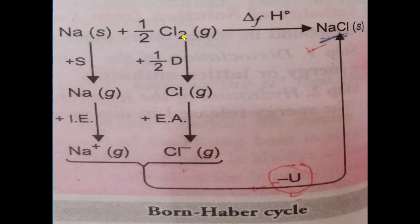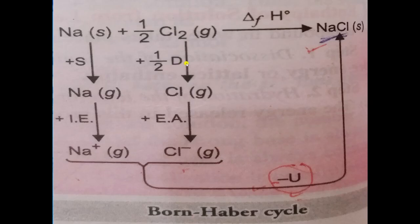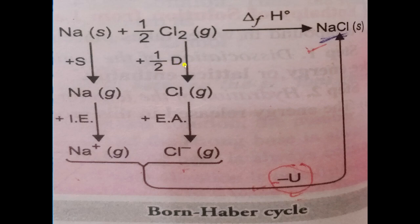Now we write equations for these steps. When sodium atom combines with half mole of Cl₂ to form NaCl, the standard enthalpy of formation is −410 kJ/mol. Step 1: crystalline sodium metal sublimes to form gaseous atom — sublimation energy S. Step 2: Cl₂ molecule converts into Cl atom — ½ of bond dissociation enthalpy. Step 3: sodium converts into Na⁺ ion — ionization enthalpy ΔiH. Step 4: chlorine accepts one electron to form Cl⁻ — electron gain enthalpy EA, sign is negative.